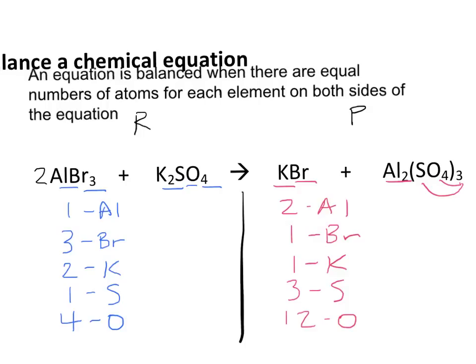I wanted to double the amount of Aluminum on this left side of the equation. Now I have two Aluminum atoms, and I also have changed the amount of Bromine. I have six Bromine atoms.